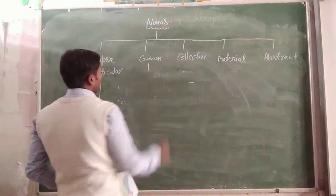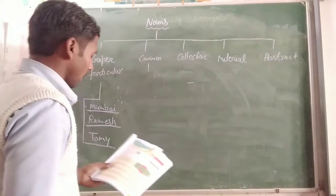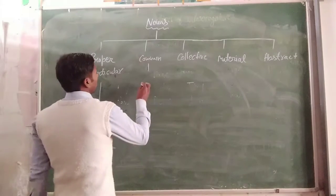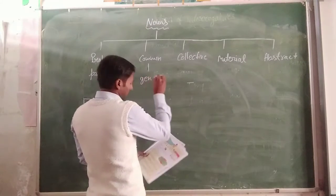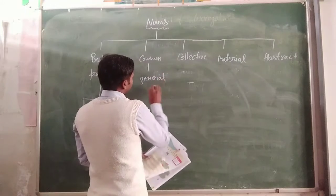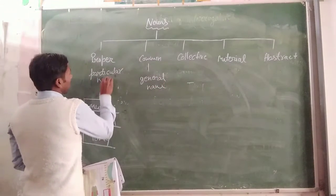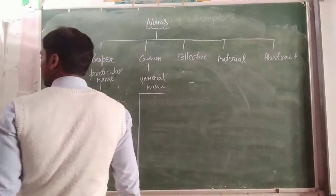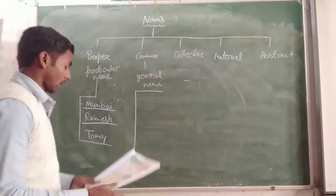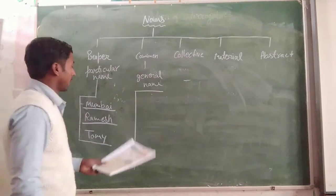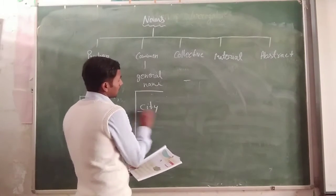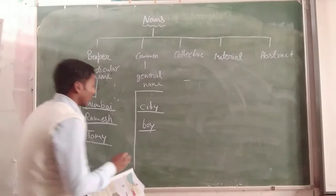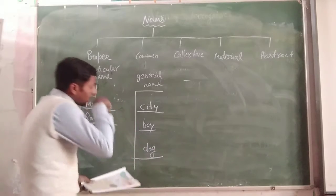Next is common noun. The name of a person, place, or animal in general is called a common noun. It means the general name of a person, place, animal, or thing. Like — city is the general name of a place, boy is the general name of a person, dog is the general name of an animal.